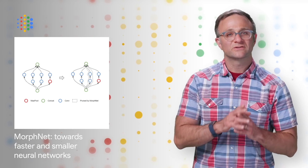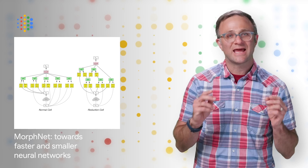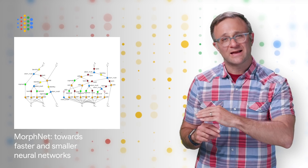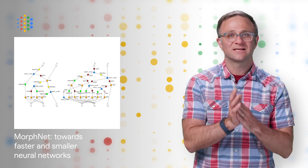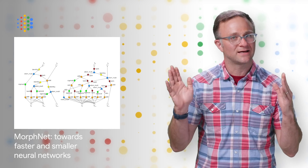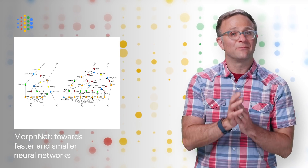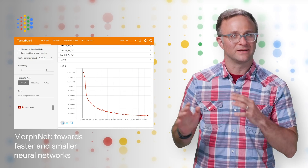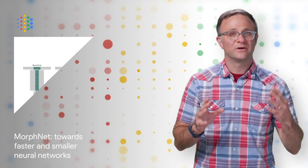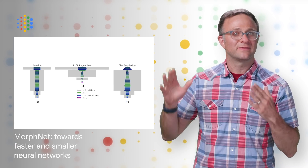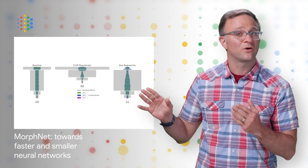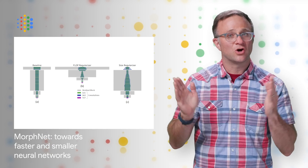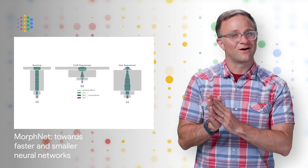Deep neural networks are great at solving hard problems such as image classification and text recognition. However, designing a network from scratch for your specific application can be a challenging task in terms of computational resources and time. One solution to this problem is MorphNet, a sophisticated technique for neural network model refinement. MorphNet takes an existing neural network as input and produces a new neural network that's smaller, faster, and yields better performance tailored to a new problem. More details about MorphNet, as well as the open source TensorFlow implementation, are on the post.